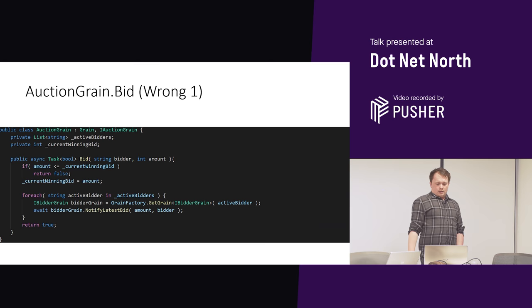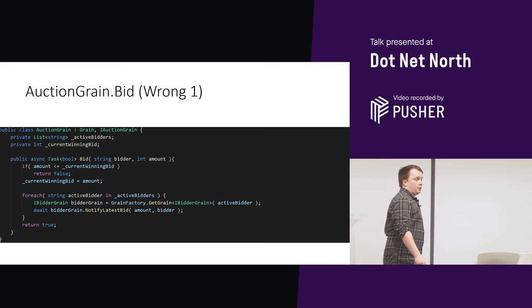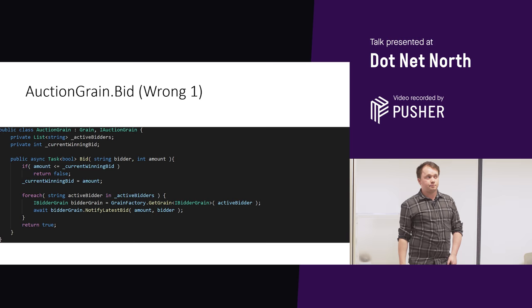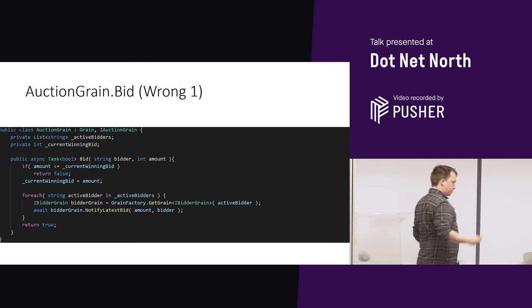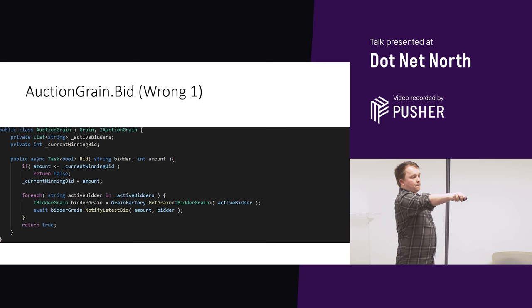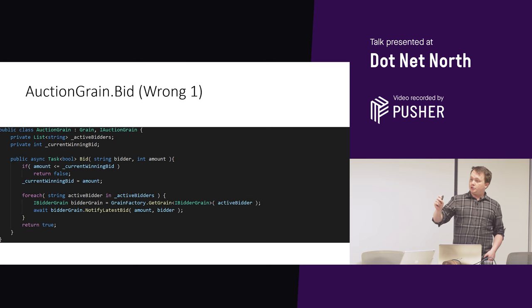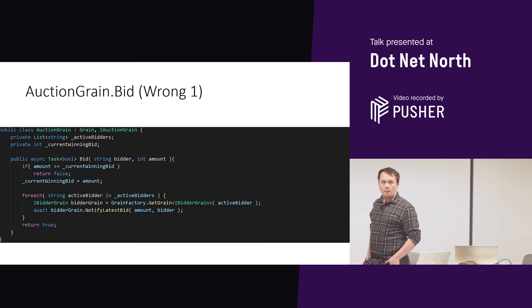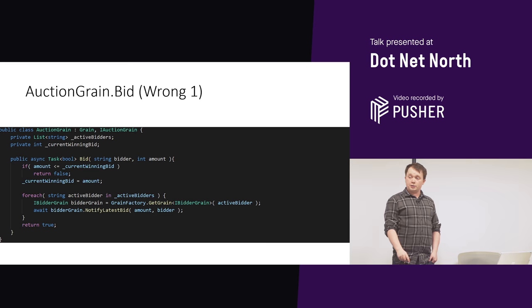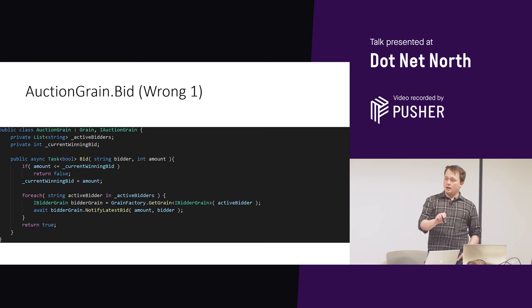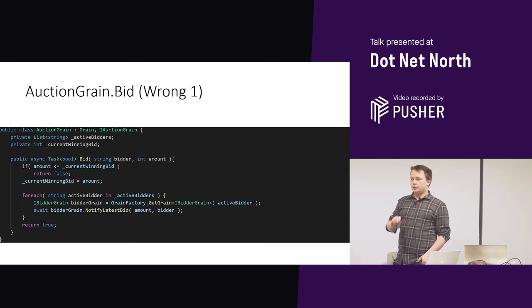Pay close attention here, because this is going to change in a couple of slides as our requirements change. Here is us doing a bid — notice it says wrong. Our bidder comes in, let's assume they won — they are now the new winning bid. So we need to go tell all of the bidders in our system: get the grain, get the bidder grain, go tell them. This does not work. In an actor framework, an actor can only process one message at a time. What you have here is an ABA problem.